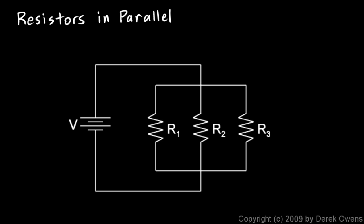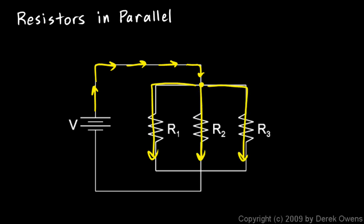Now we'll talk about resistors in parallel. Here's a picture showing a battery connected to three resistors that are in parallel. The essential aspect of a parallel circuit is that the current divides. Imagine electric current — these are electrons coming out of this battery and flowing along this wire. They get to this point, which we call a node, and the current divides. Some of the electrons go down this branch through R1, some through R2, and some through R3. The branches from R1 and R2 come in from the sides, and they all rejoin at this node, and the electrons go back to the battery.